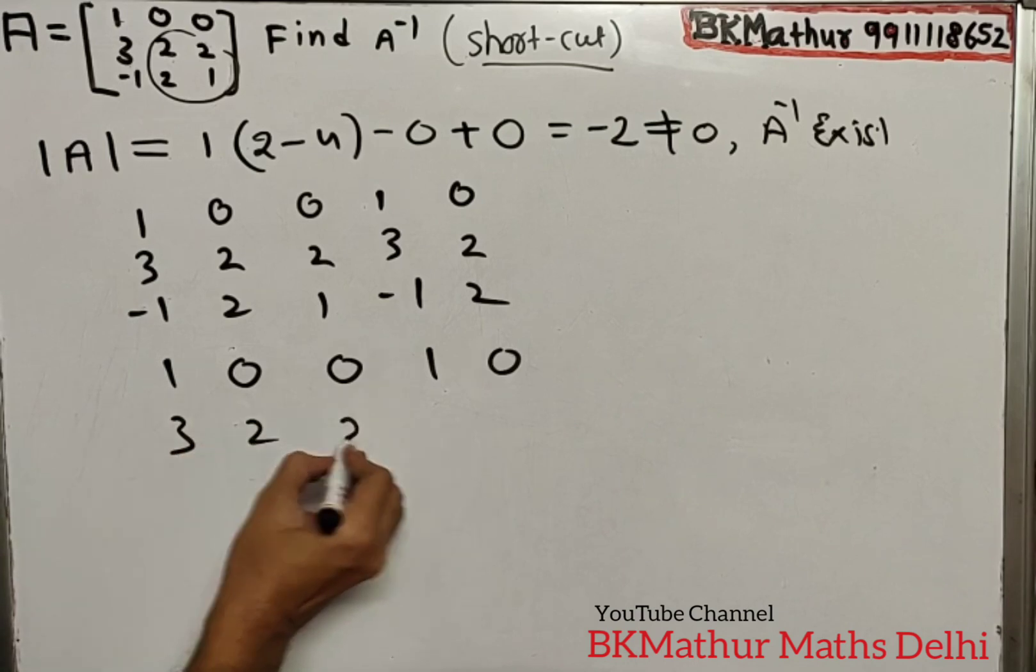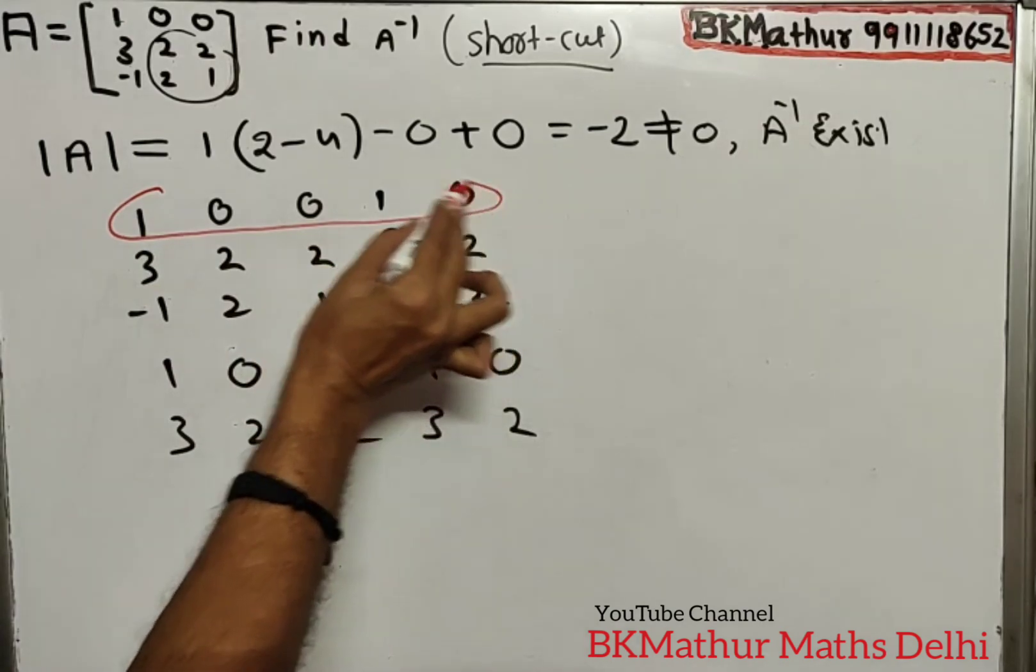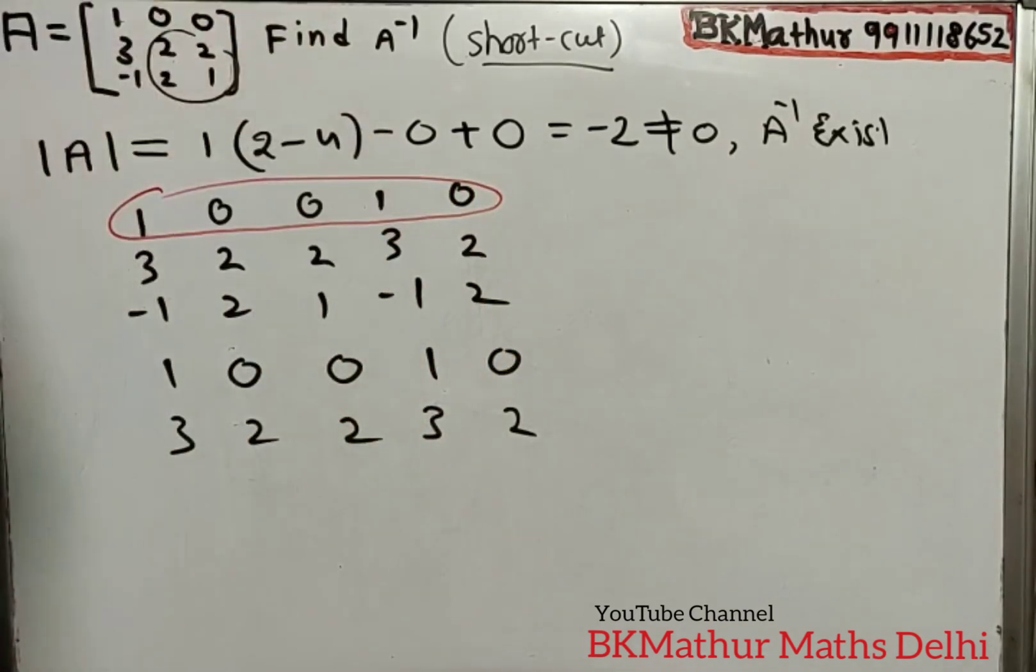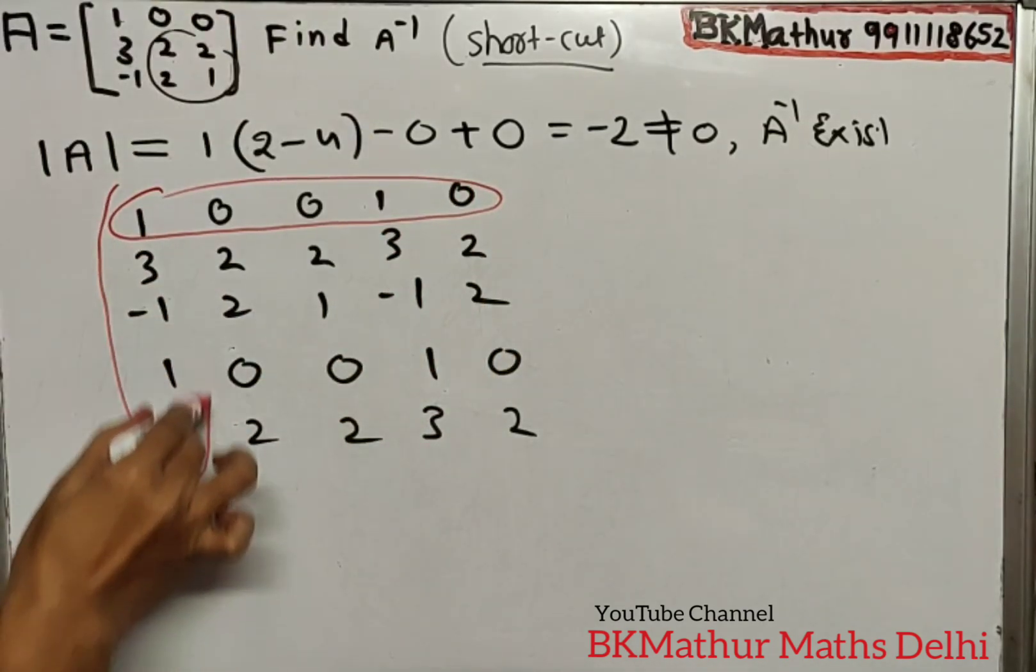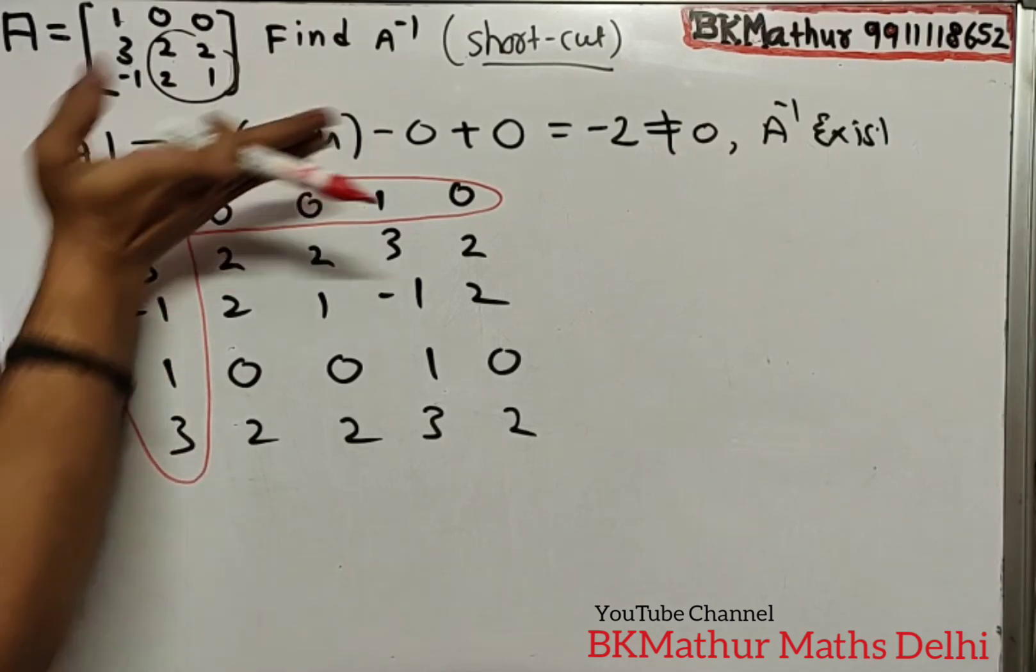Next step: delete the first row - it doesn't exist anymore. And ignore this column too. Both of these are not for you anymore.